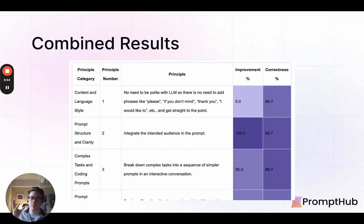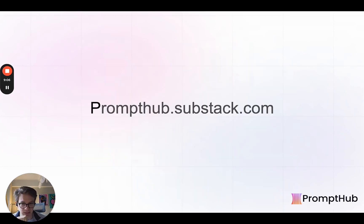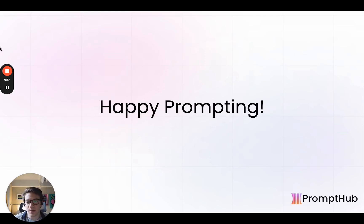So again, now that you're a little bit more oriented, you'll be able to see the principles, the improvement percentages, the correctness percentages, the categories. We did it for both 3.5 and 4. And you can access that just from prompthub.substack.com. Drop your email in, it will get sent to you, and then you'll have access to the Google sheet and you can filter it, copy the data, whatever it might be. And happy prompting. Let me know if you have any questions.